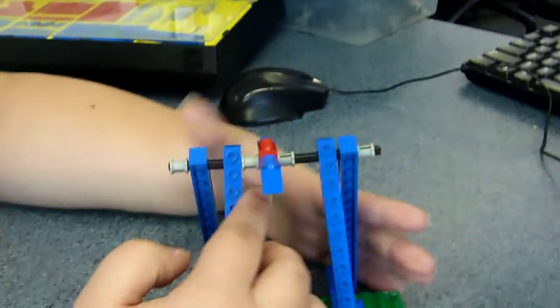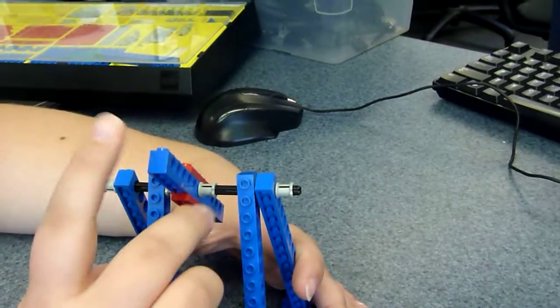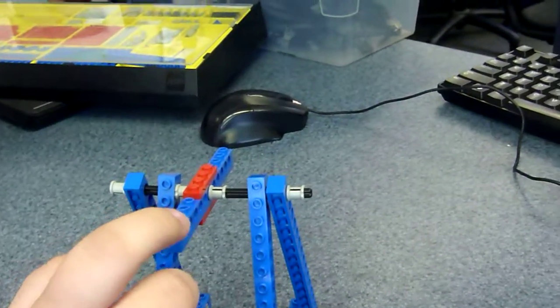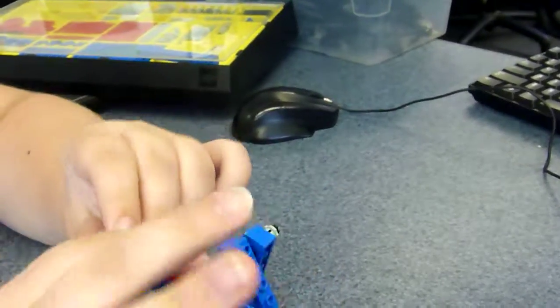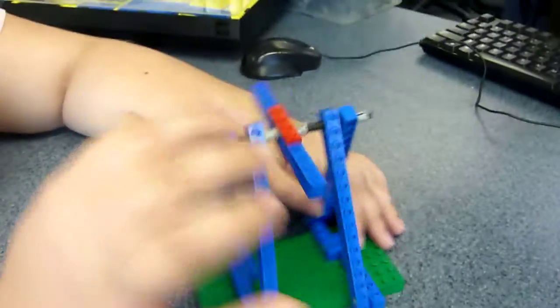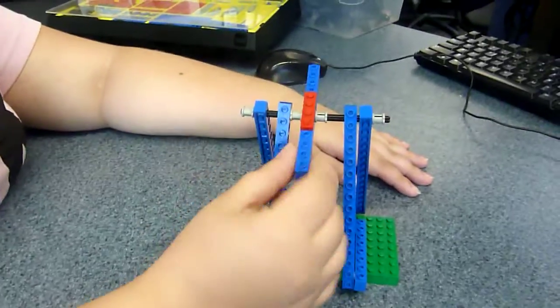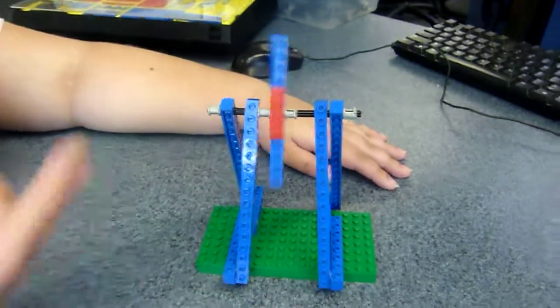Now, the fulcrum is the axle here, and the load is the red part, the weight, where all the weight is. And the effort is right here, where it makes it go around and around.